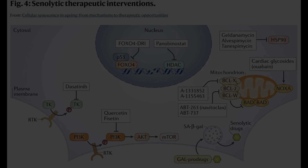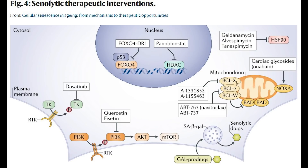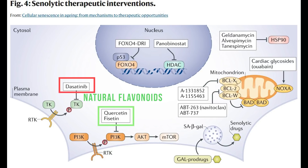This figure from a recent review article nicely summarizes how current senolytics are thought to act in the cell — which different proteins they target to cause the senescent cell to enter cell death. There are many different types of senolytics, including natural compounds such as quercetin and fisetin, both natural flavonoids found in different foods. Notably, quercetin seems to act most effectively as a senolytic when combined with another drug, dasatinib.